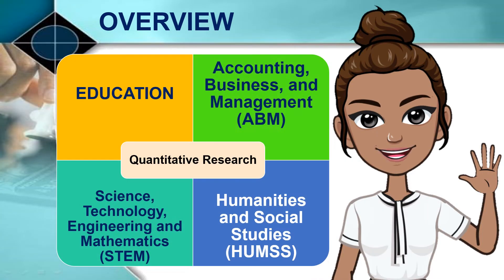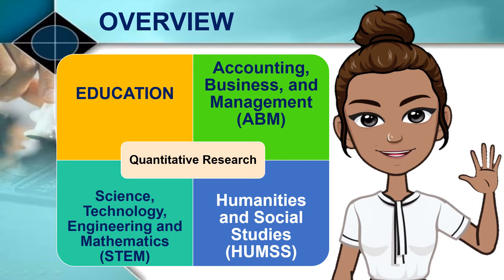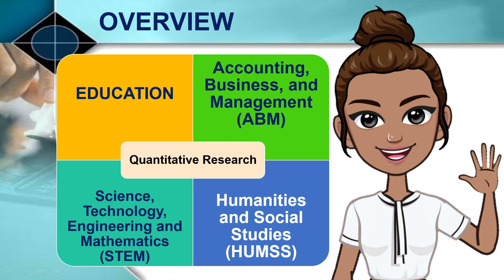Our lesson today focuses on the importance of quantitative research in four significant disciplines: education; accounting, business, and management, or ABM; science, technology, engineering, and mathematics, or STEM; and humanities and social studies, or HMS. It is inevitable that some of you are asking why we have to study and make research. Knowing the importance of quantitative research will provide us clearer insights and directions to answer these questions. I need you to focus and let me know what you realize through the reflection part of your module.